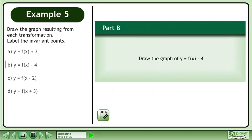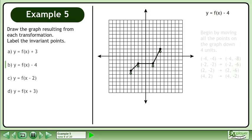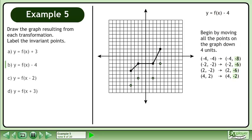In Part B, we'll draw the graph of y equals f(x) minus 4. This graph will be vertically translated down 4 units.